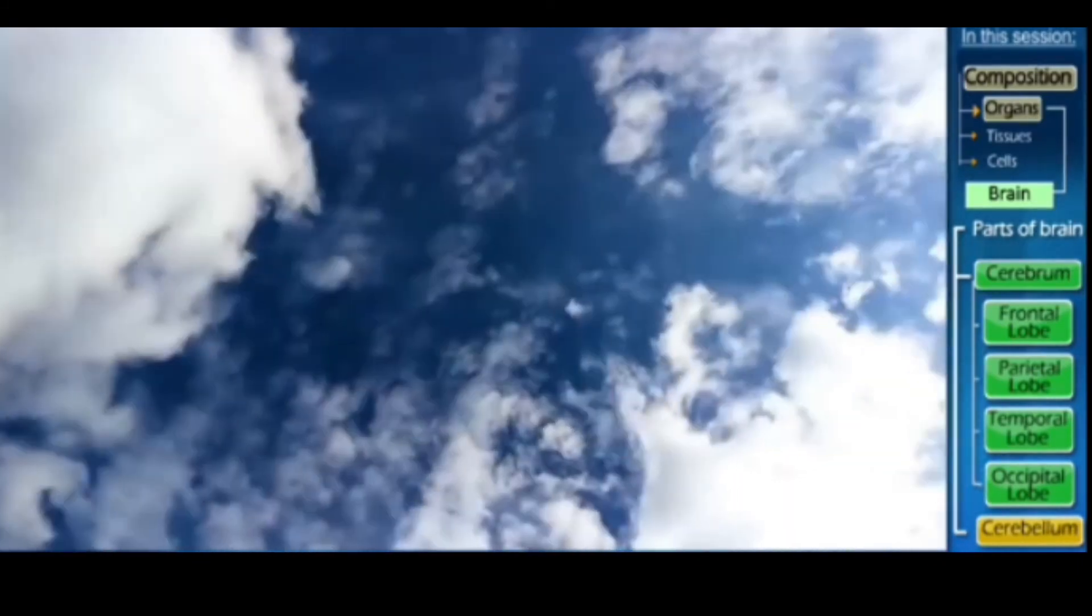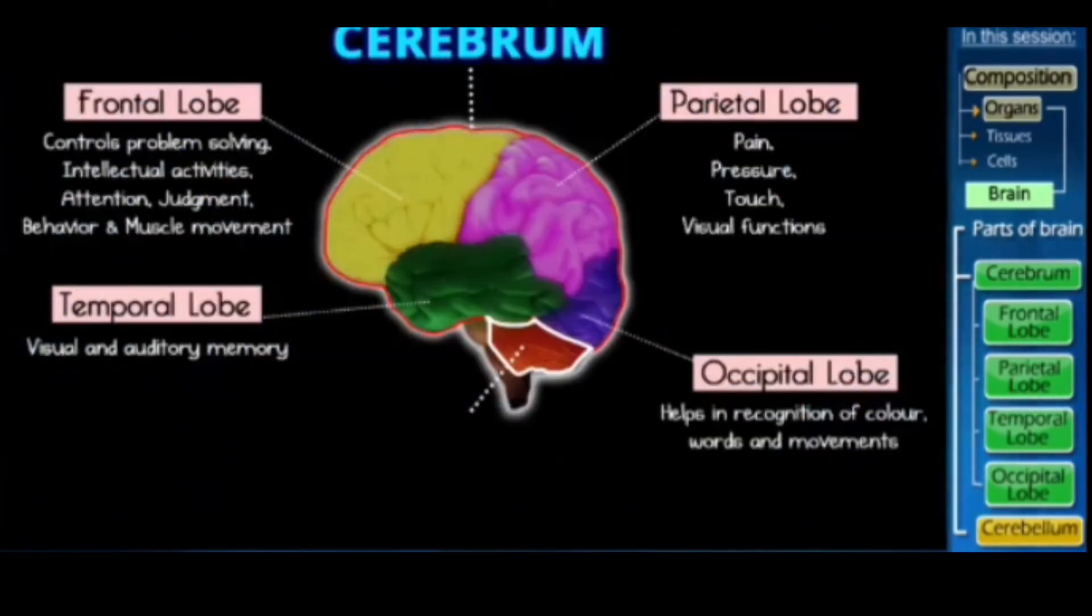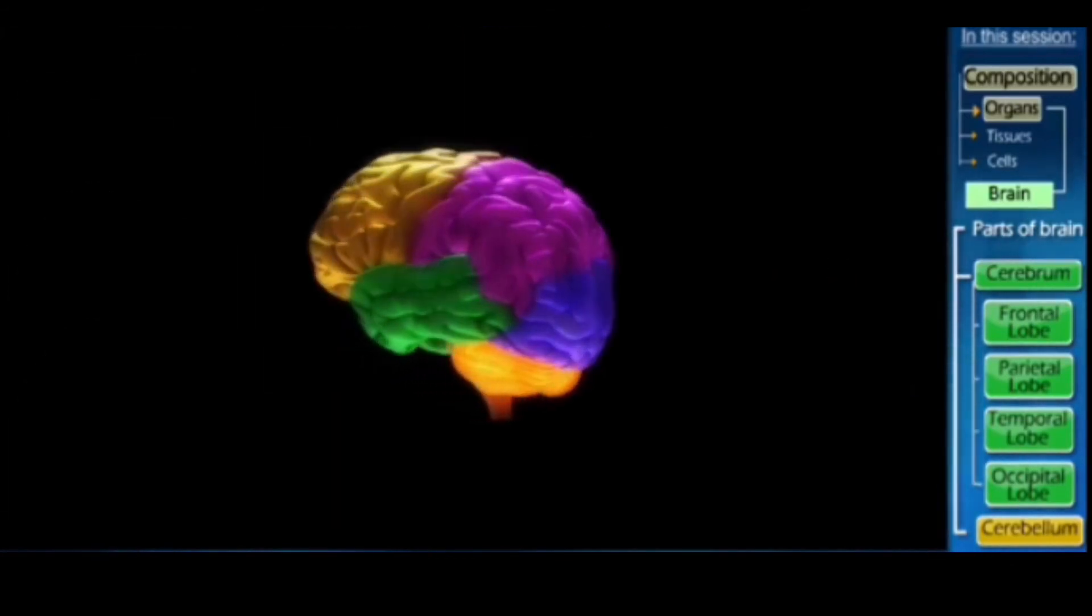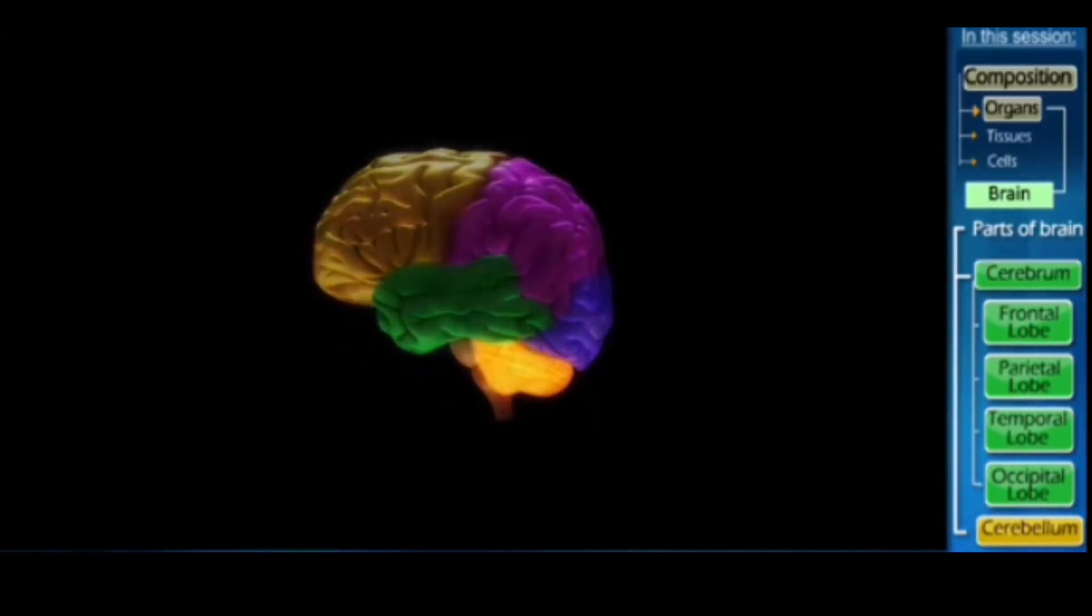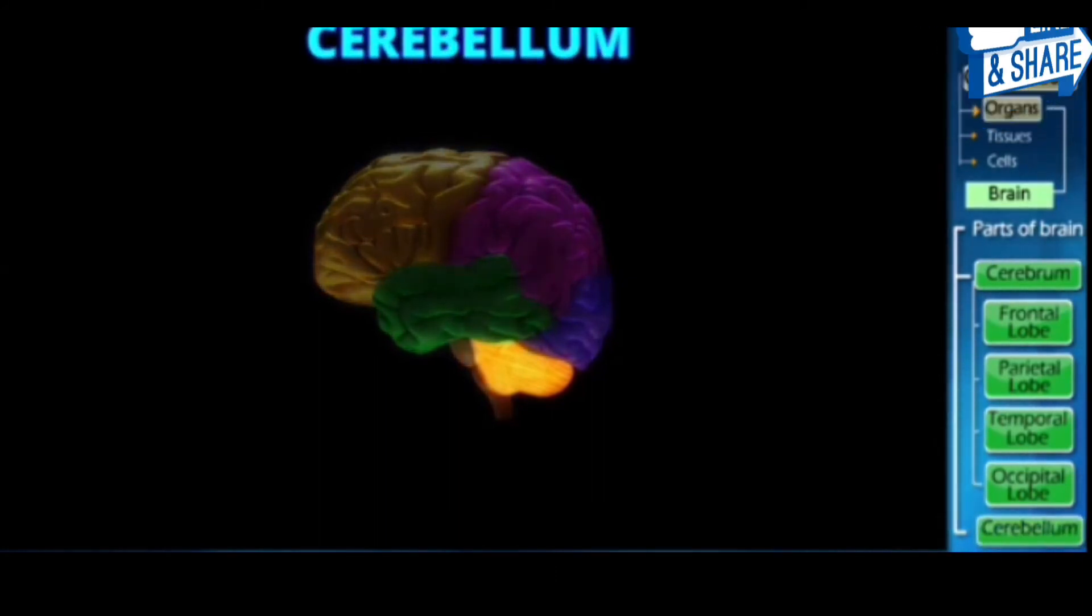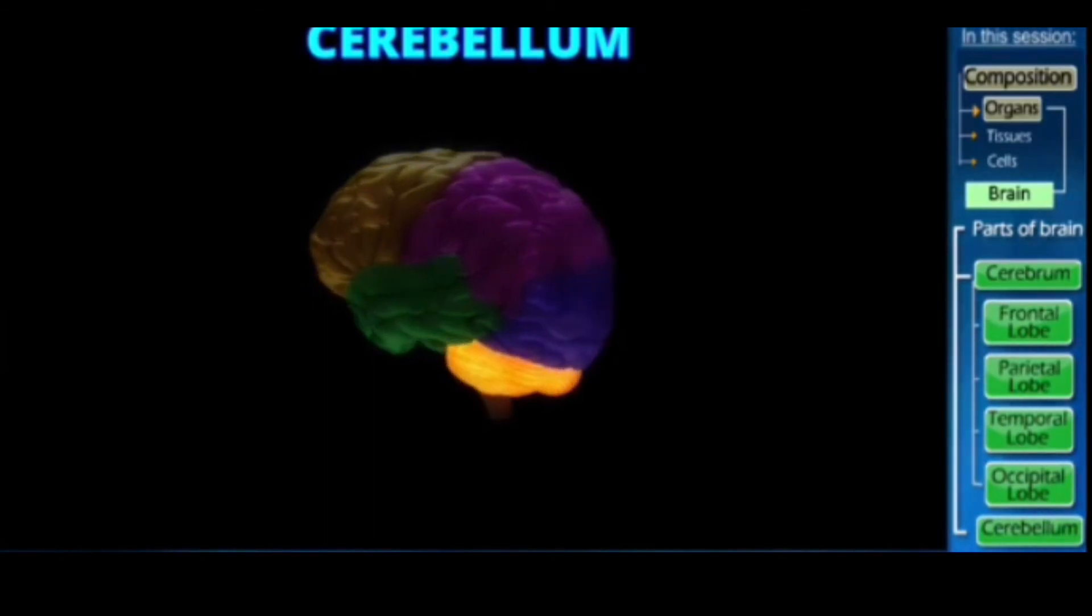Now let's move to the second part of the brain. The small bulge at the back of your brain that you can see is called the cerebellum. Just like the cerebrum, this cerebellum is also divided into two halves. It is called a small brain.